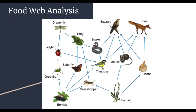Let's look at this food web and do an analysis. Look at the food web and write down what you think the two producers are. The two producers in this food web would be berries and plantains. These are then eaten by the herbivores: green fly, grasshopper, butterflies, and birds, and then the omnivores: mice and rabbit.